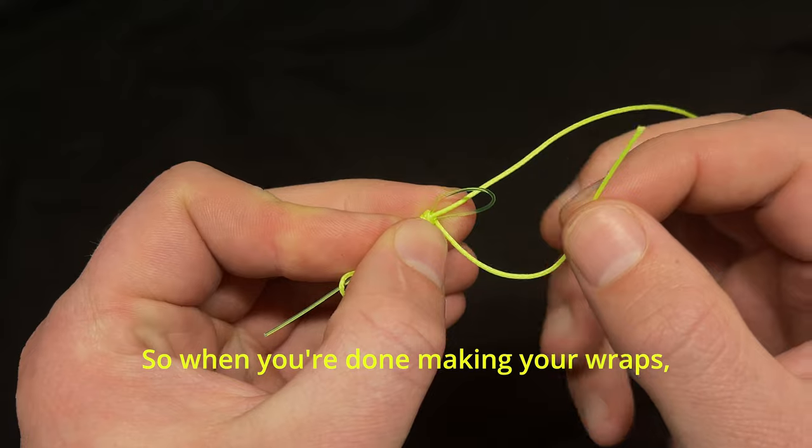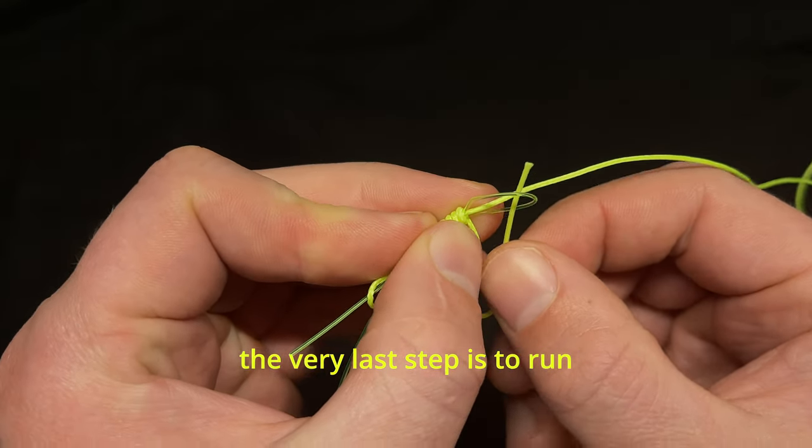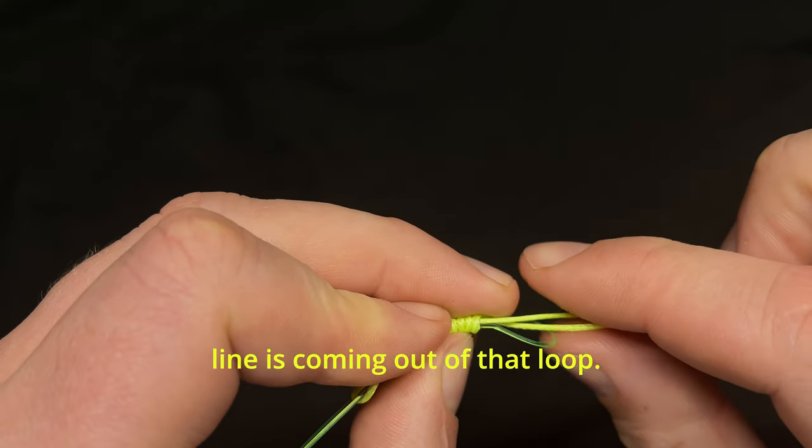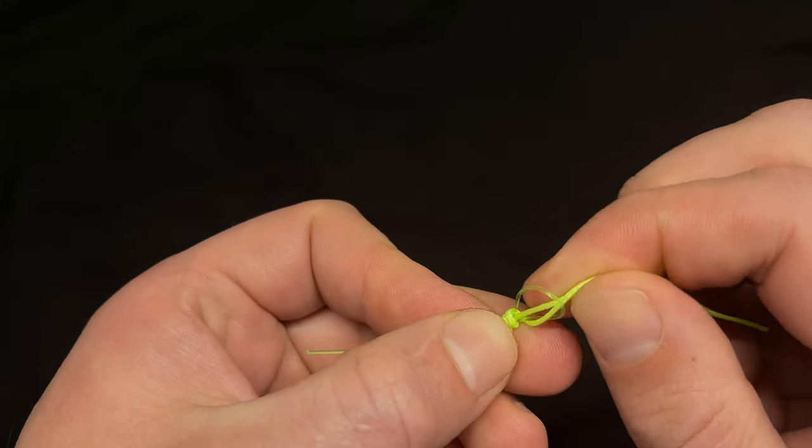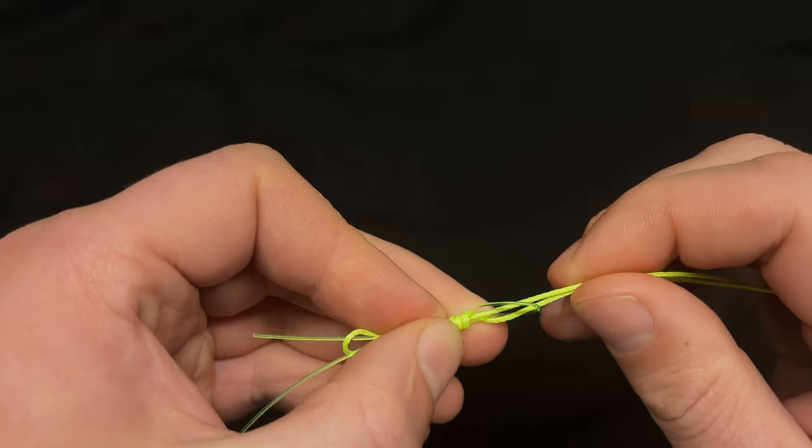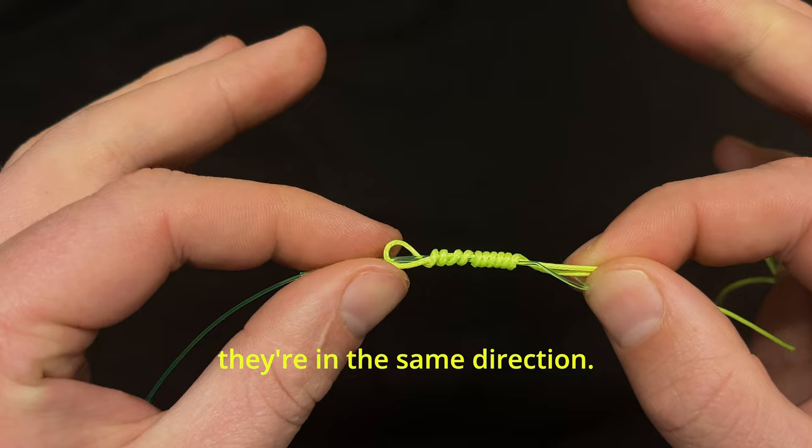When you're done making your wraps, the very last step is to run your tag end through the loop, and you want to run it through the same direction that your main line is coming out of that loop. In this case both are coming out of the top of that loop, and I want to make sure they're in the same direction.